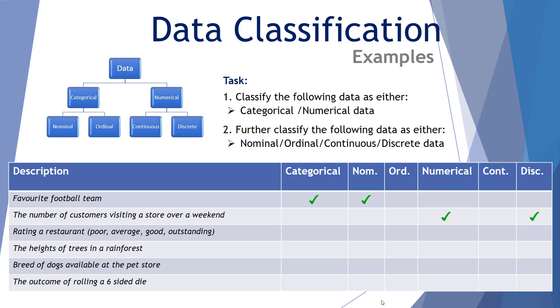The third example, rating a restaurant as poor, average, good, and outstanding. That's categorical. And there's definitely an order from poor to outstanding. So it's categorical data, and it's also ordinal data. Number four, the heights of trees in a rainforest. That can be measured. So it's numerical. And because it can be measured to a range of precision, we consider that to be continuous data.